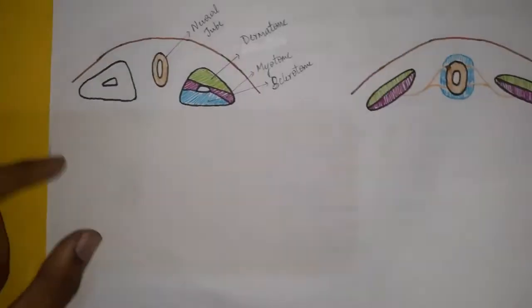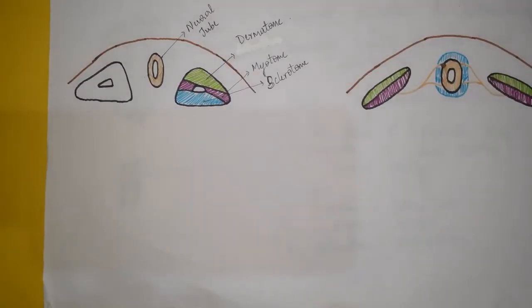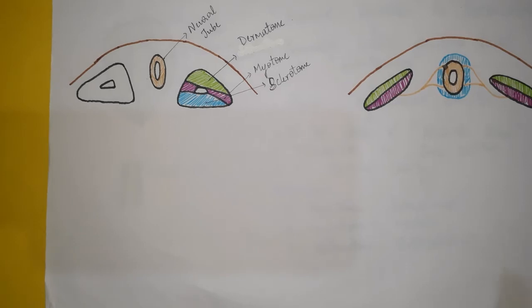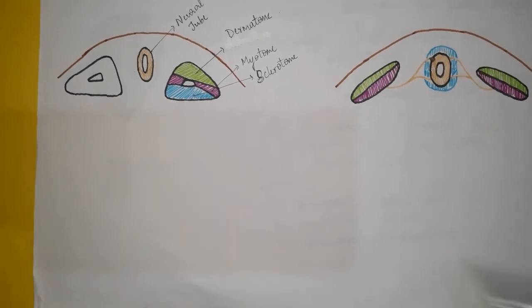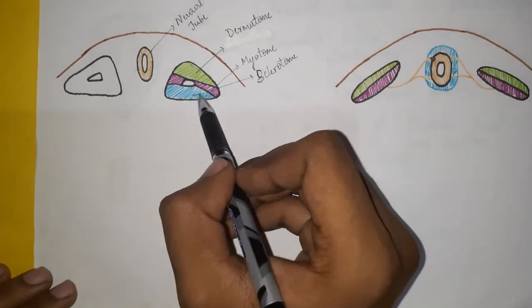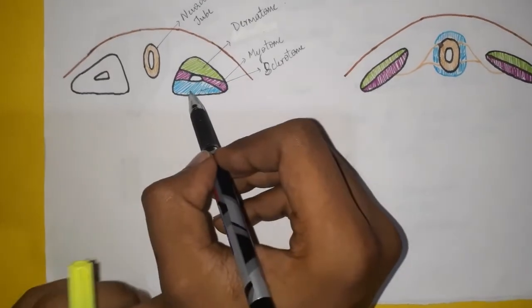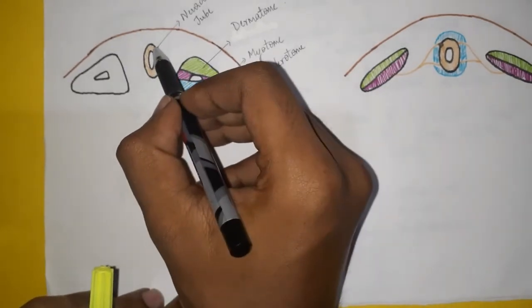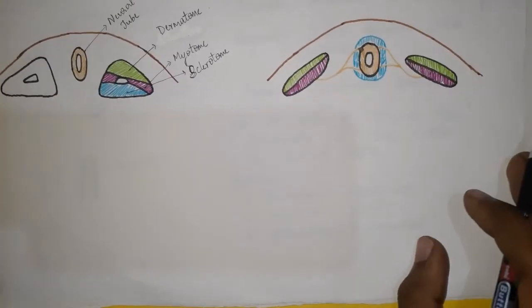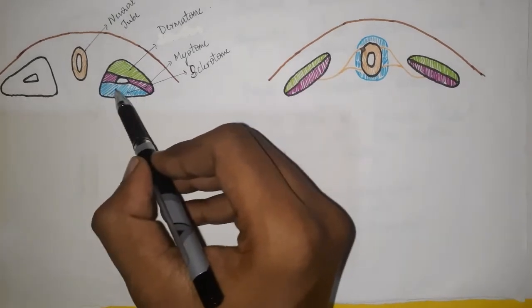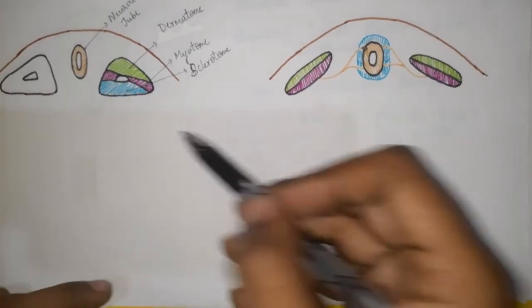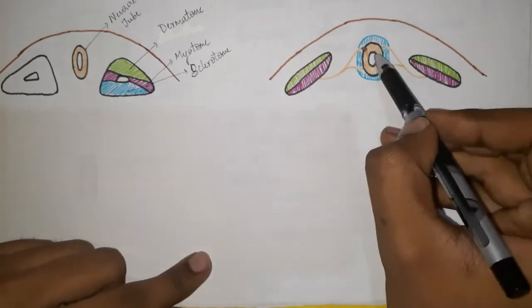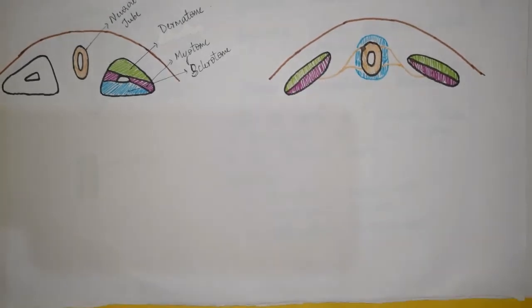The sclerotome area migrates towards the neural tube and surrounds it. In future, this sclerotome forms the vertebral column and ribs.